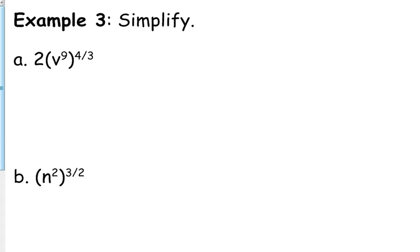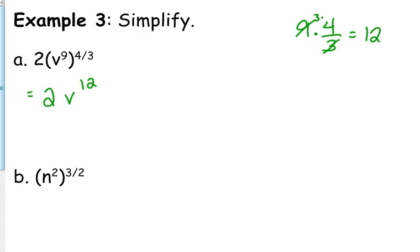So we have something like 2 times V to the 9th, and that V to the 9th is being raised to the 4 thirds. We have a power raised to a power — when that happens we multiply. So that's going to be 2 times V to the 9 times 4 over 3. The 9 over 3 cancels to 3, so that's equal to 12 — 9 over 3 reduces to 3, and then 3 times 4 is 12. This is just an example where it turns out to be a whole number.